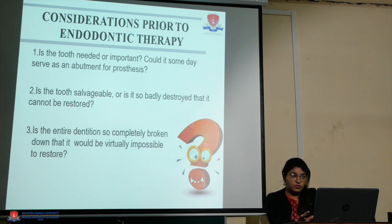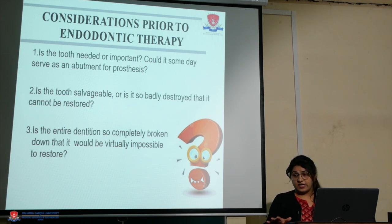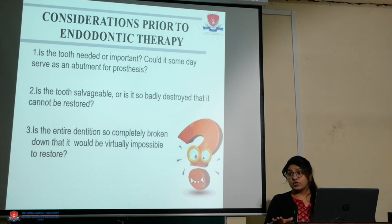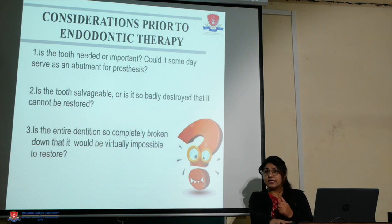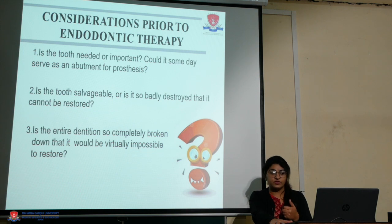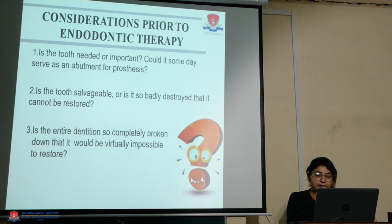The first consideration is whether the tooth is needed or important. For example, third molars are most often advised for extraction, but sometimes you have to decide if the tooth is strategic — that is, it holds an important position in the oral cavity, such as serving as an abutment for a prosthesis. In that case, you have to determine its importance and decide whether to save it or go for extraction.